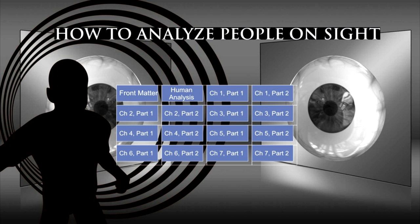Combinations Common in America. The average American man or woman is a combination of some two of these types, with a third discernible in the background. To understand human beings, familiarise yourself first with the pure or unmixed types, and then it will be easy and fascinating to spell out their combinations and what they mean in the people all about you. Until you have learned these pure types thoroughly, it will be to your advantage to forget that there is such a thing as combinations.